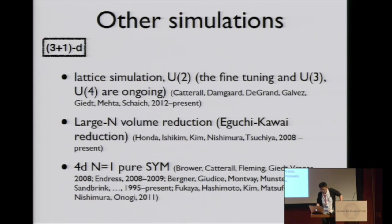The large n volume reduction, so-called Eguchi-Kawai reduction, can also be used when we are interested in only large n limit. Some interesting quantities are calculated by Japanese group. For 4D, N=1 pure super Yang-Mills case, there are many works. Basically, they are trying to observe a gaugino condensation.